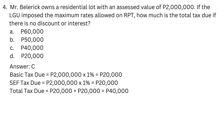Answer: C. Basic tax due equals 2 million times 1% equals 20,000. Total tax due equals 20,000 plus 20,000 equals 40,000.